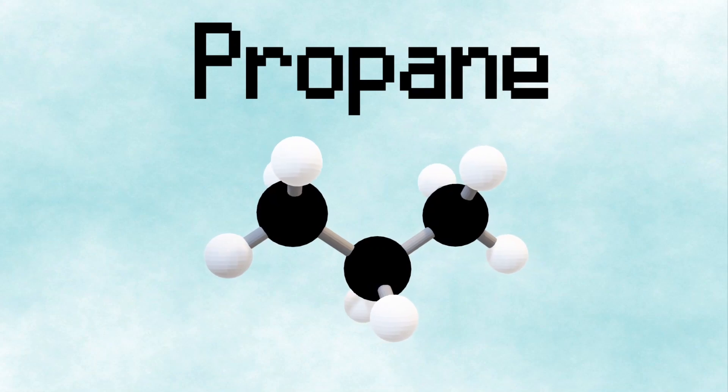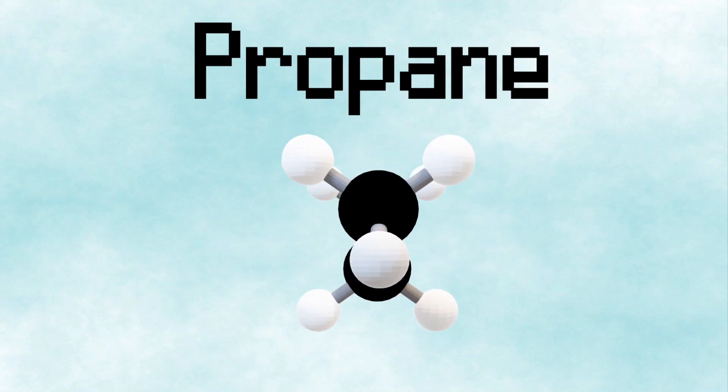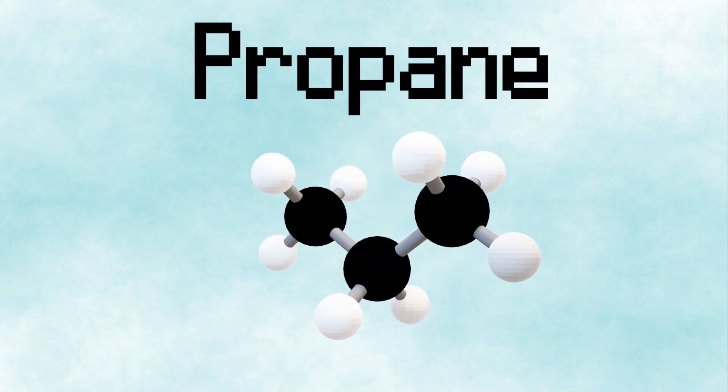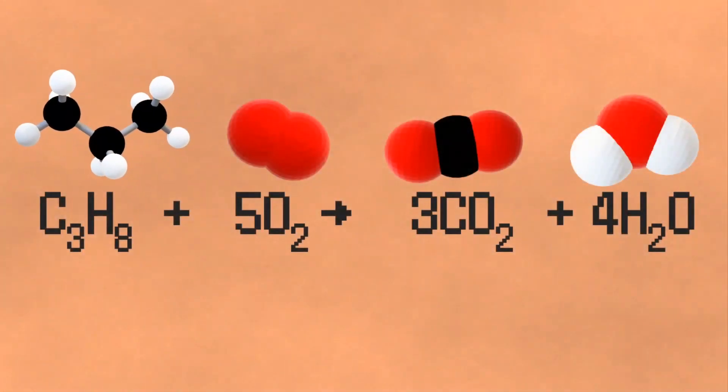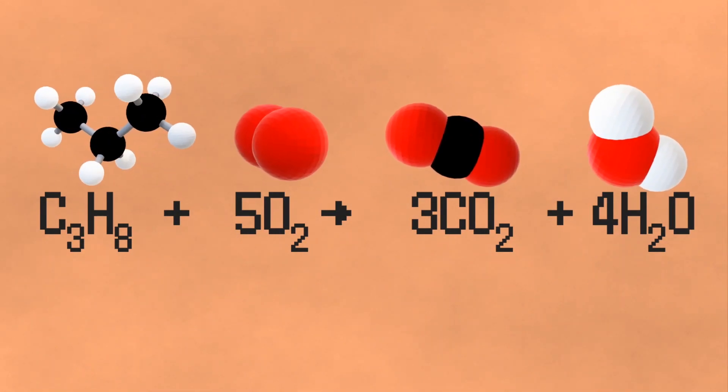Propane is a molecule that is commonly burned as a fuel in things like blowtorches, barbecues, and portable stoves. When propane combusts, it reacts with oxygen in the air to form carbon dioxide and water vapor, bursting into flames.